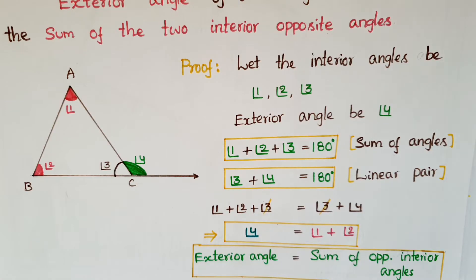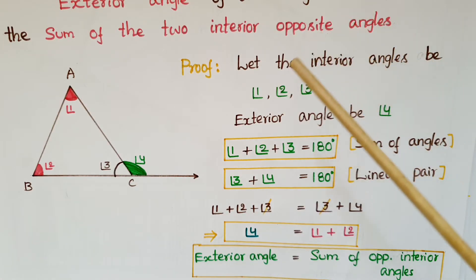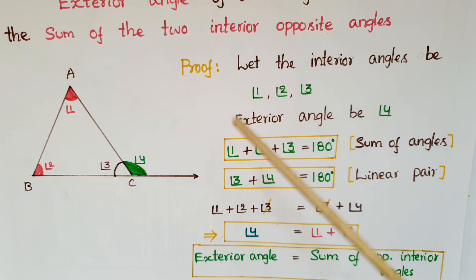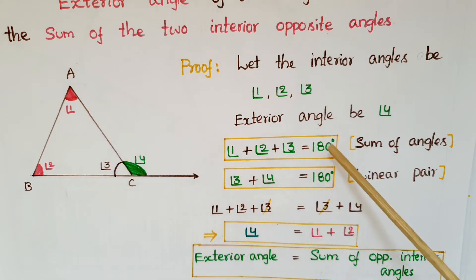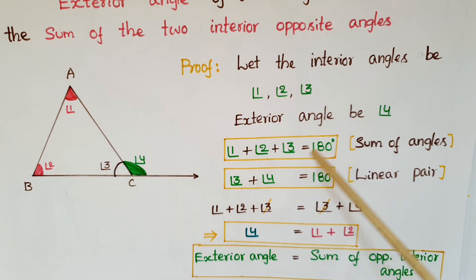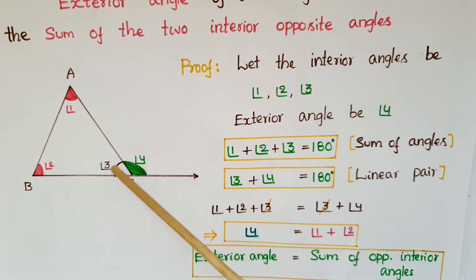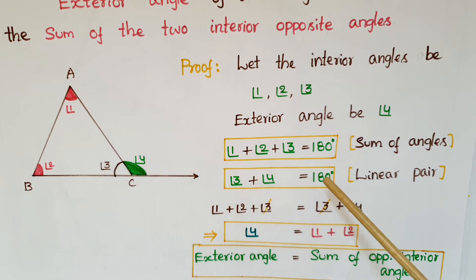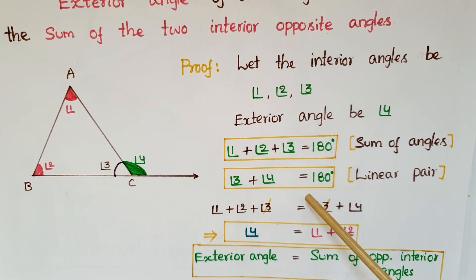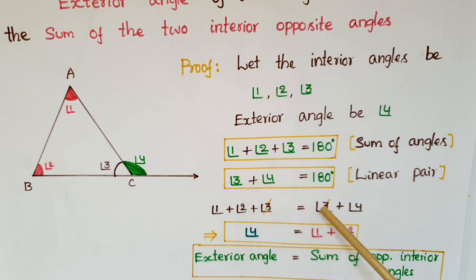We know that the sum of interior angles of a triangle is 180 degrees. So angle 1 plus angle 2 plus angle 3 equals 180 degrees. Also, there is a linear pair, so angle 3 plus angle 4 equals 180 degrees. Equating these two equations gives us angle 1 plus angle 2 plus angle 3 equals angle 3 plus angle 4.